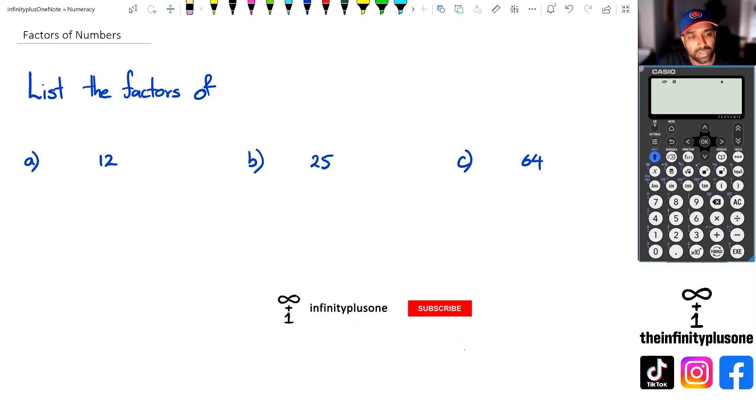So looking at that first question, finding factors of 12, what we need to do is write down all the numbers that actually multiply to 12. So if you think about it like this, we are going to have 1 times 12,